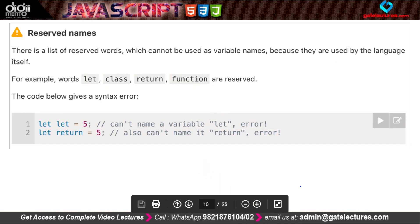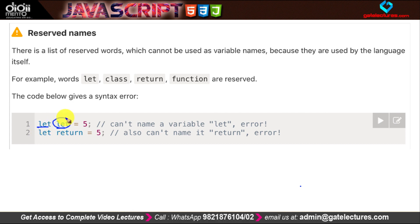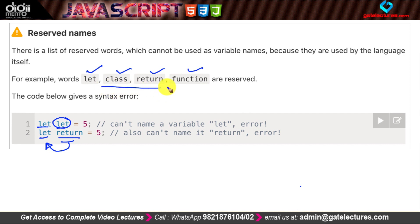There are some reserved keywords that we cannot use as variable names. For example, we cannot do 'let let' because 'let' is a reserved keyword. Similarly, 'return' is also a reserved keyword. Keywords like 'let', 'class', 'return', and 'function' are all reserved. You can do a simple Google search to find all JavaScript reserved keywords — we cannot use any of them as variable names.